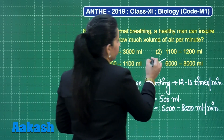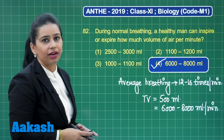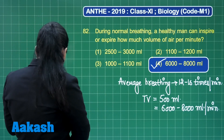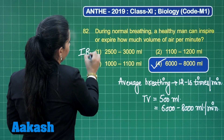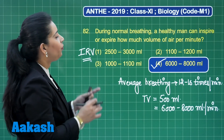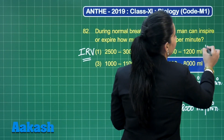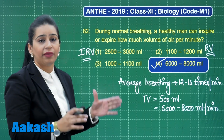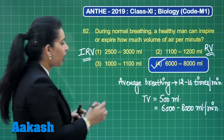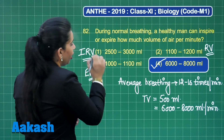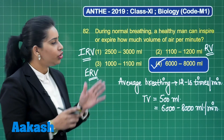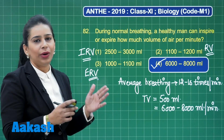The correct answer is option number 4: 6000 to 8000 ml. Let us discuss the other options: 2500 to 3000 ml is the IRV — inspiratory reserve volume — the additional volume that can be inhaled forcefully. 1100 to 1200 ml is the RV — residual volume — the air remaining in lungs even after forceful exhalation. And 1000 to 1100 ml is the ERV — expiratory reserve volume — the additional air that can be exhaled forcefully.